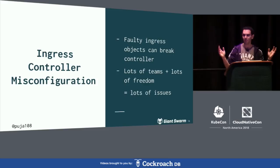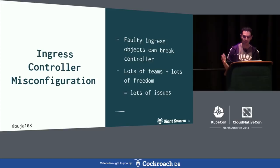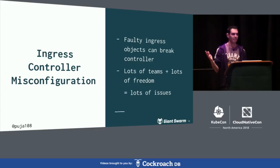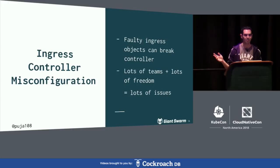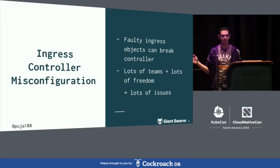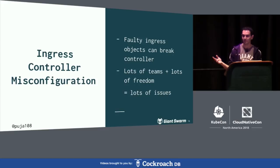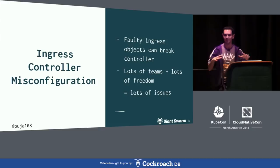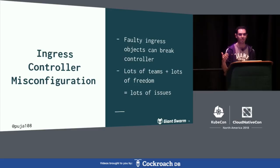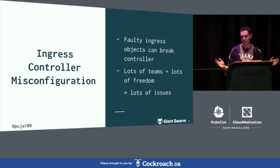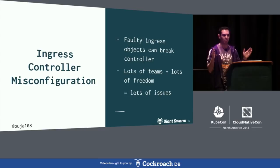If you run ingress controllers, you may have seen issues, especially with complex software like Nginx. We usually run Nginx — we're very happy with it — but in certain older versions, a faulty ingress, like having a wrong certificate, would break the whole ingress controller. That means even if your monitoring front end has a wrong certificate, it could break your production website because it's on the same ingress controller. With lots of teams and lots of freedom, you get lots of issues. The solution is to update to a newer version — Nginx 0.15 and 0.17 and upward handle this better.